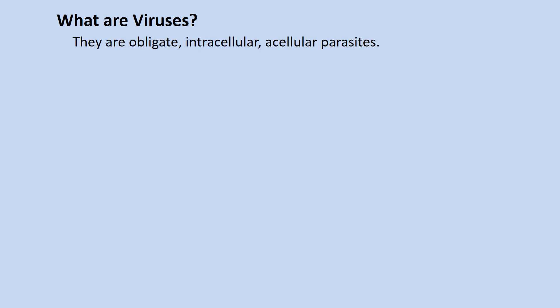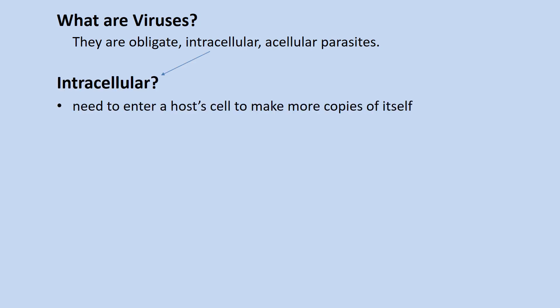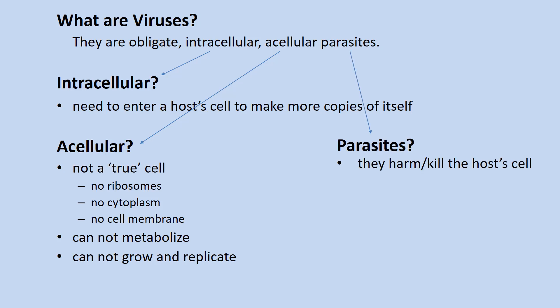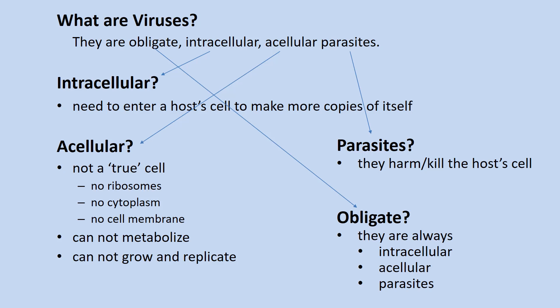So this brings up the question: what are viruses? I'll describe them as obligate intracellular acellular parasites. Intracellular because they need to enter a host cell that in turn makes more copies of the virus particles. Acellular because they're not true cells — they don't have the common cellular components mentioned before and thus lack basic cell functions. They're parasitic because the host cell ultimately dies; the host cell does not benefit from being invaded by viruses. And lastly, obligate because the virus always needs to enter the host cell in order for more copies to be made.